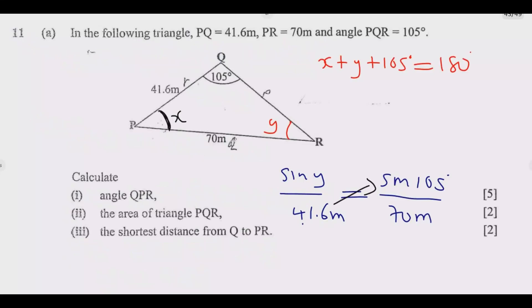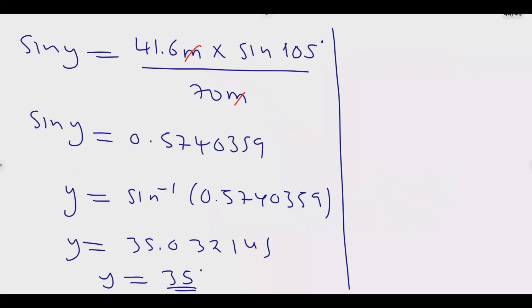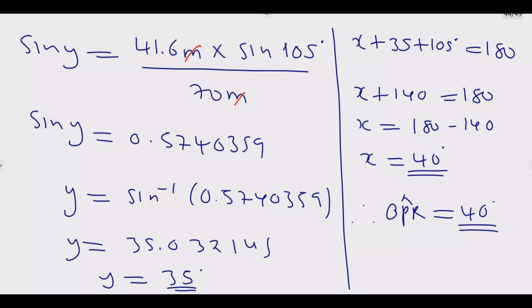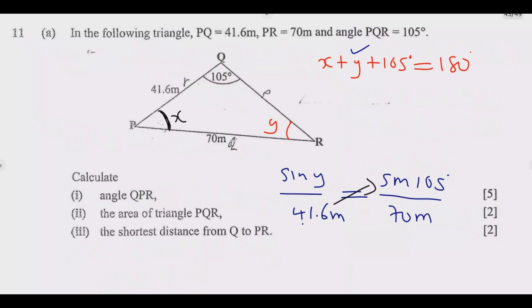Now we can find the value of X. We have X plus 35 plus 105 degrees equals 180. Then X plus 140 equals 180. So X equals 180 minus 140, which is 40 degrees. Therefore, angle QPR equals 40 degrees. You get the 5 marks.